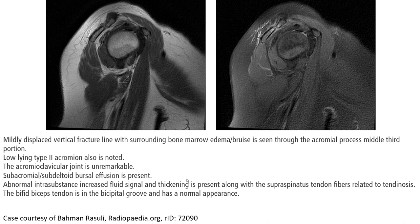This is the MRI image of the sub-acromial region of the left shoulder, showing the middle or third portion. A relating Type 2 acromial finding is noted. The acromioclavicular joint is unremarkable.